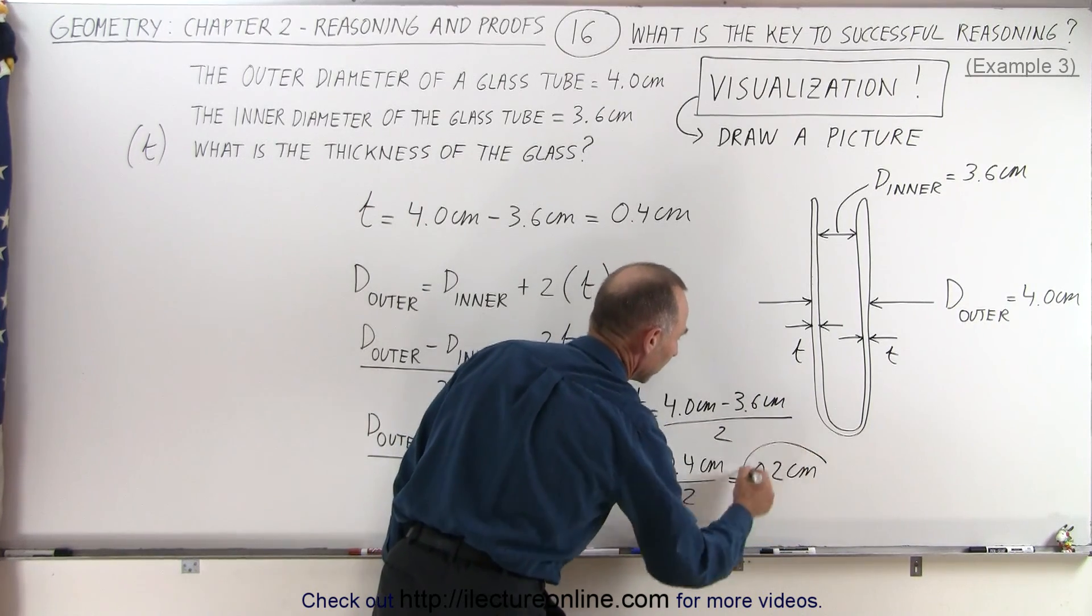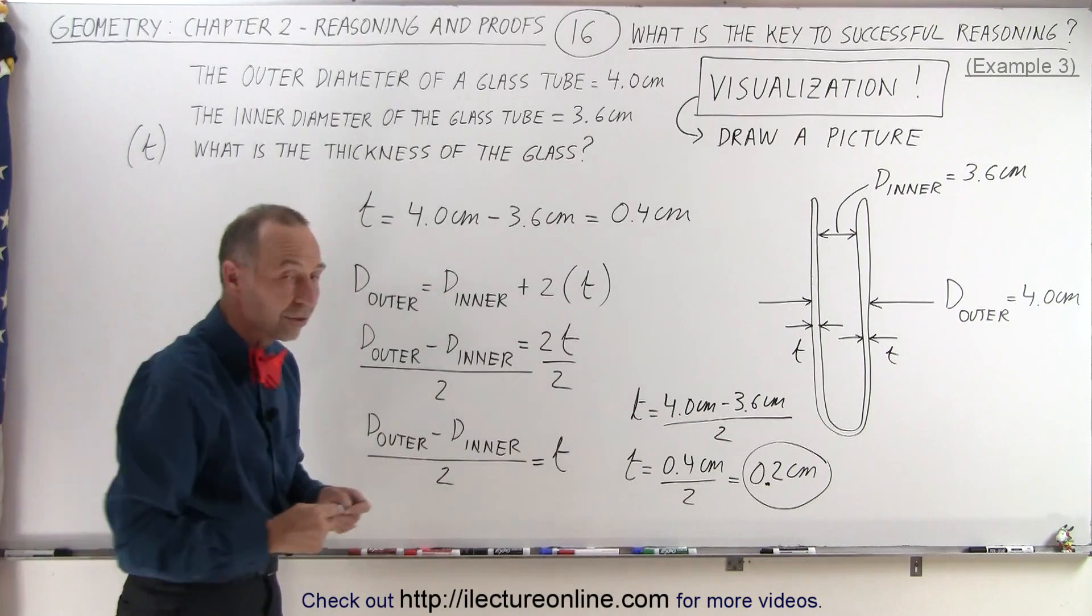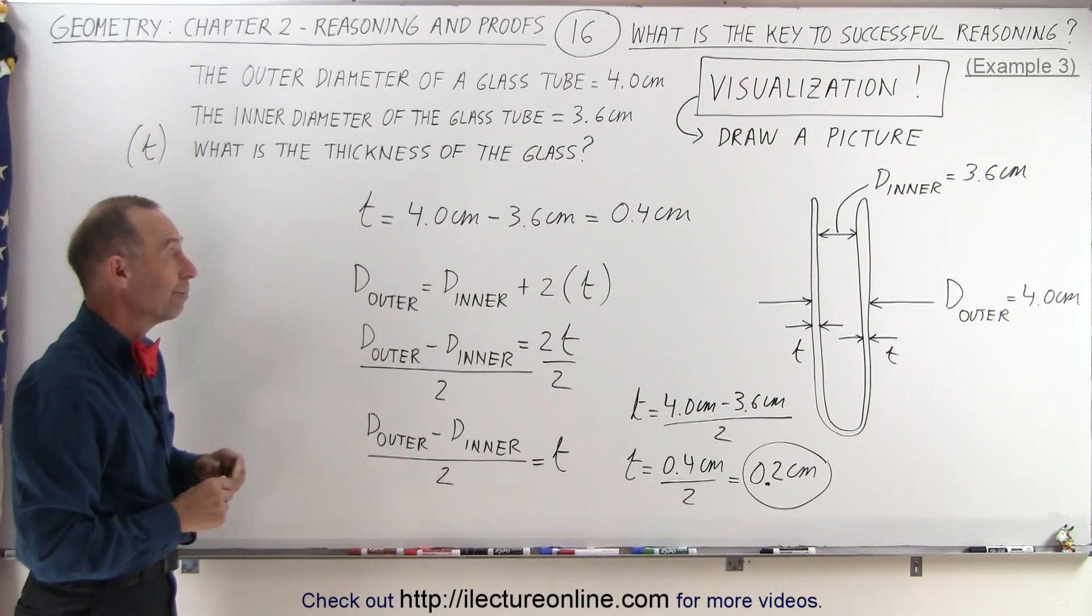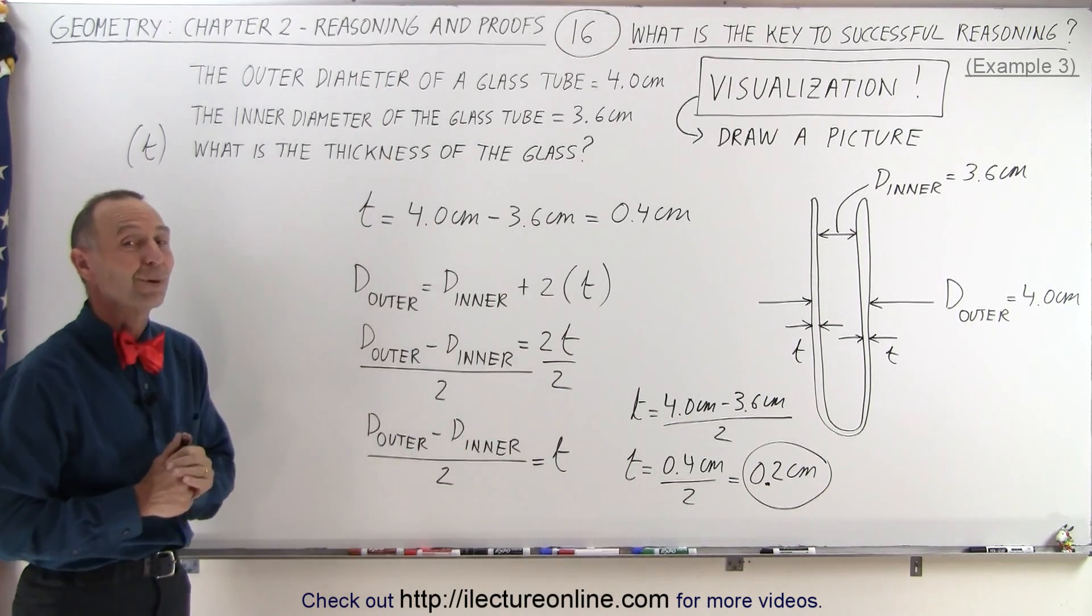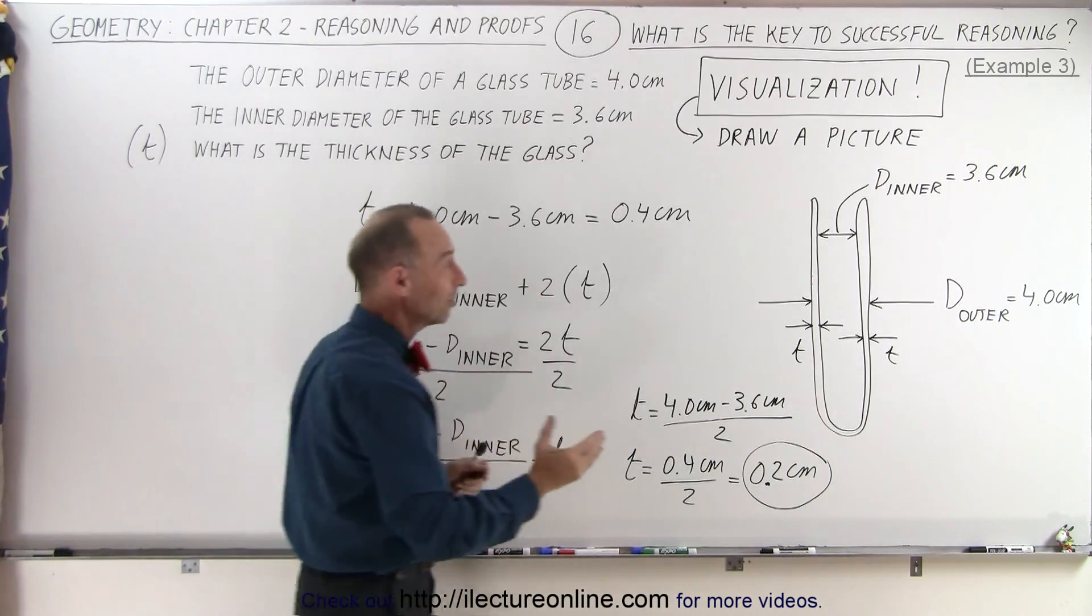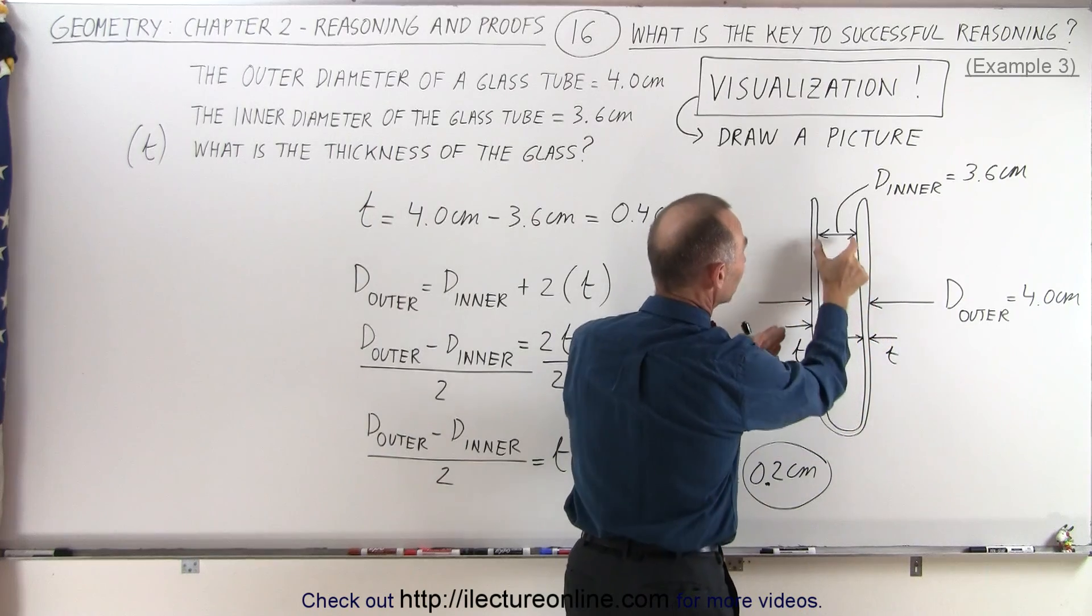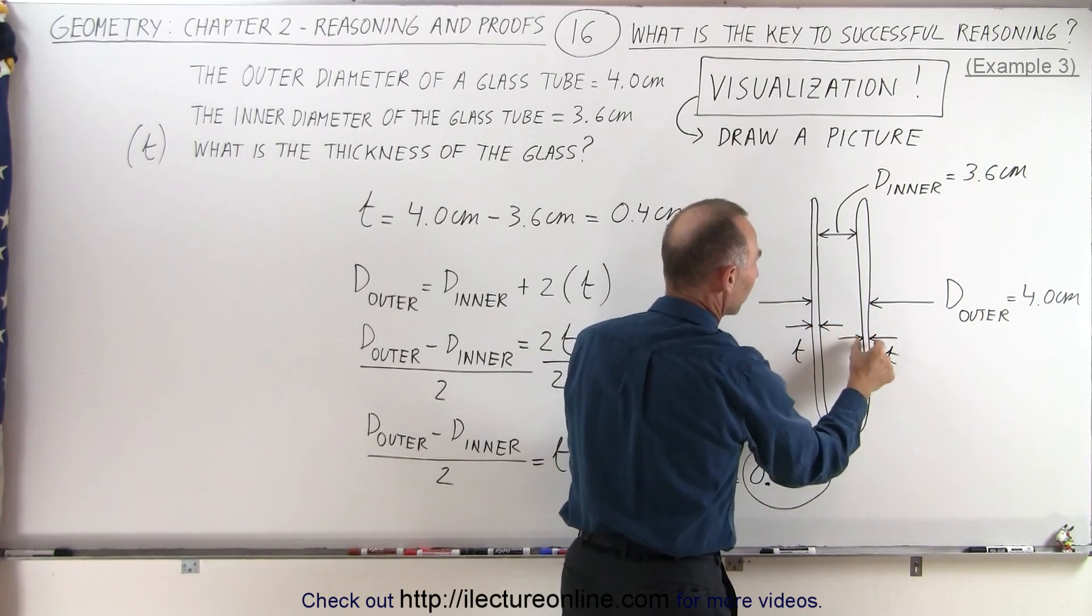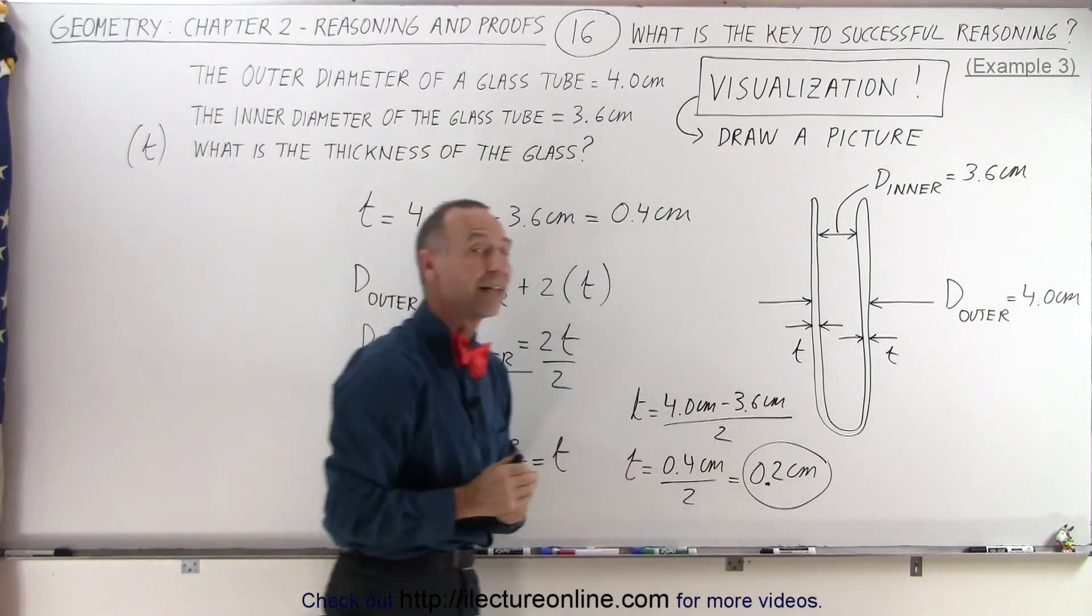So, you can see that the actual answer is only 0.2 centimeters when many students thought it was 0.4 centimeters. And notice that when you draw the picture, you can then clearly see that this distance is equal to this plus this plus that, twice the thickness of the glass.